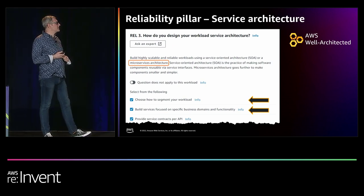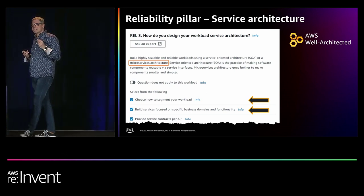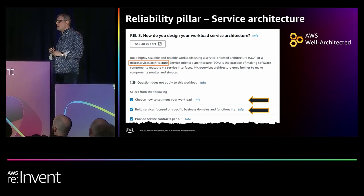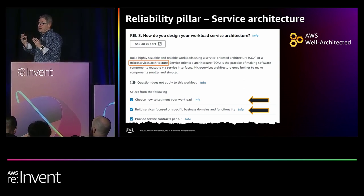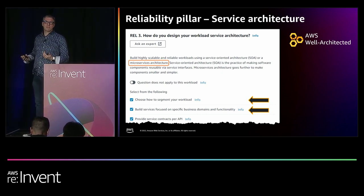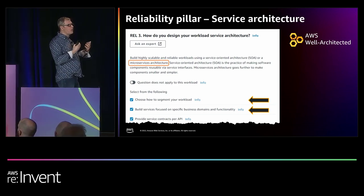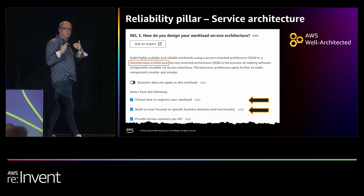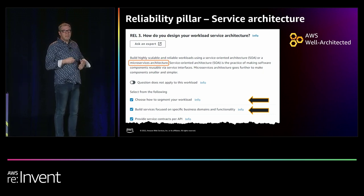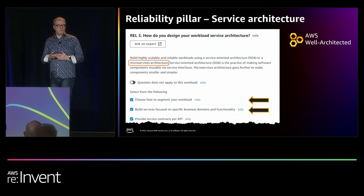Now we get to the best practices. This is a snapshot of the Well-Architected tool in the AWS console. Best practices are shown as questions with checkboxes. In this case, the best practices we're interested in are how do you segment your workload, and how do you focus those segments on specific business needs. I circled microservices there — you don't have to use microservices to achieve these best practices, but that is what IMDB did.